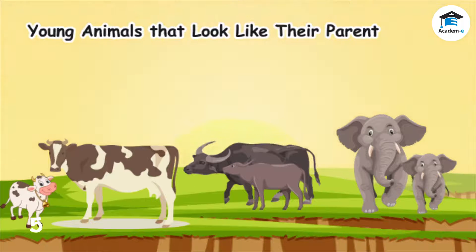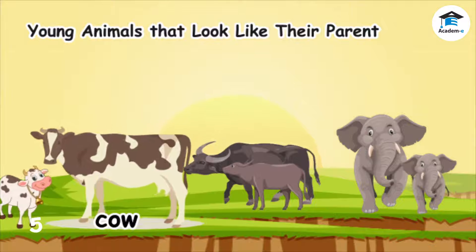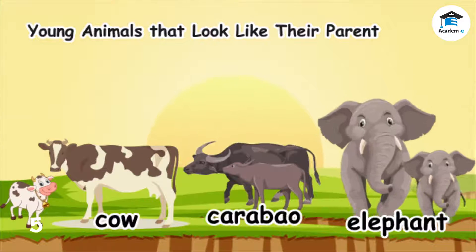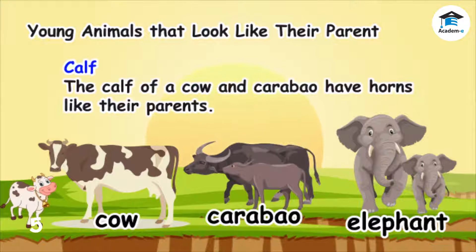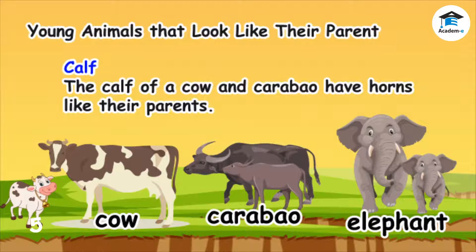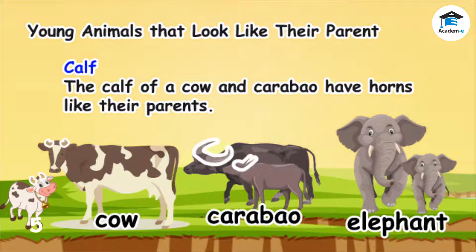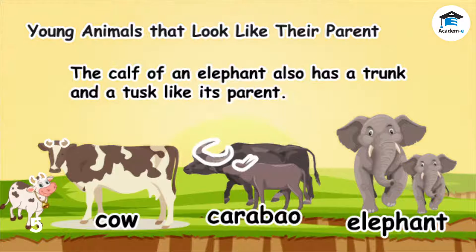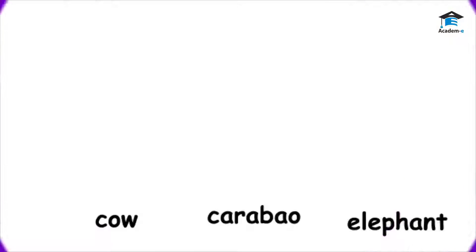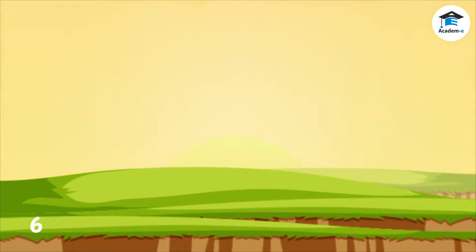Look at the following pairs of parent and young animals. The young of a cow, carabao, and elephant are called calf. These calves have body parts that are like their parents' body parts. The calf of a cow and a carabao also have horns like their parents. The calf of an elephant has a trunk and a tusk like its parent. These calves also have the same body coverings as their parents.